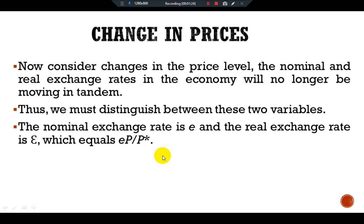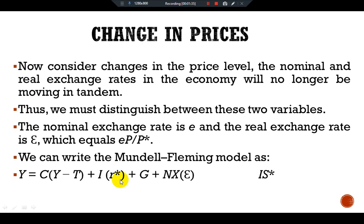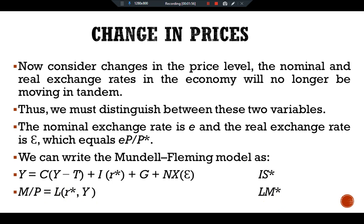We can write the Mundell-Fleming model as: Y = C(Y − T) + I(r*) + G + NX(ε), which is the IS* equation. And M/P = L(r*, Y), which is the LM* equation. Notice that net exports here depend on the real exchange rate epsilon.